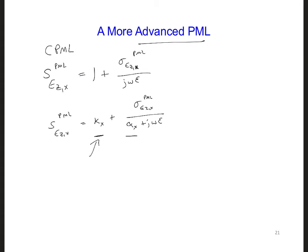So what kappa does is it amplifies the attenuation of the wave in the PML, and alpha here shifts the pole in the complex plane away from the origin.